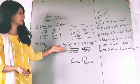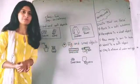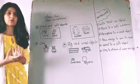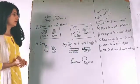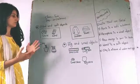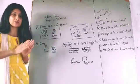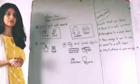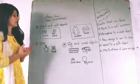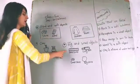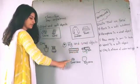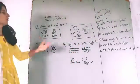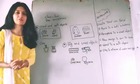Moving on to the next one, we have big and small objects. This is the last topic for today's session. When we look around, we can see many objects — some which are big and some which are small. By seeing an object, we can recognize whether it is big or small. For example, we can see a small scale, a long tail, a small stone, and a big stone.